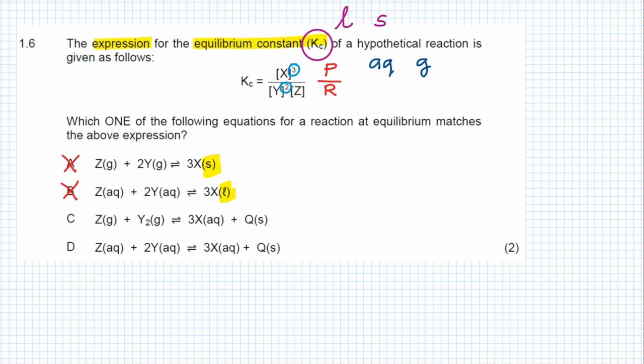Then we have option C where all of the values in the Kc expression are present: Z is a gas, Y is a gas, and X is an aqueous solution. So all of these are permissible in the expression.